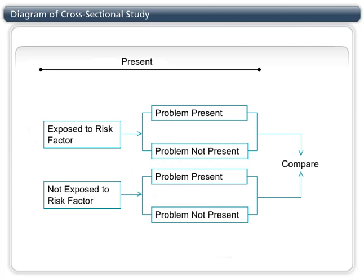Here is a diagram of the cross-sectional study design. Exposures and health outcomes are measured at the same time — everything under the bar is measured at that one point in time. Analytically, you can measure the prevalence of the risk factor or the outcome, and you can make comparisons of these between groups.